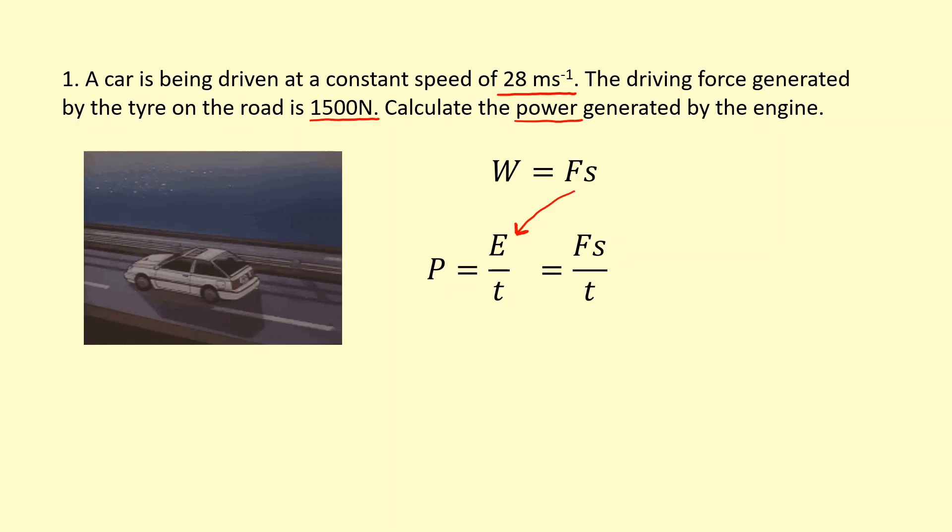Now the problem is I don't have s or t, the displacement or the time. However, I do know that s over t, displacement over time, is velocity. So I'm going to put v instead of that. So I get P equals Fv which is a really useful equation to remember.